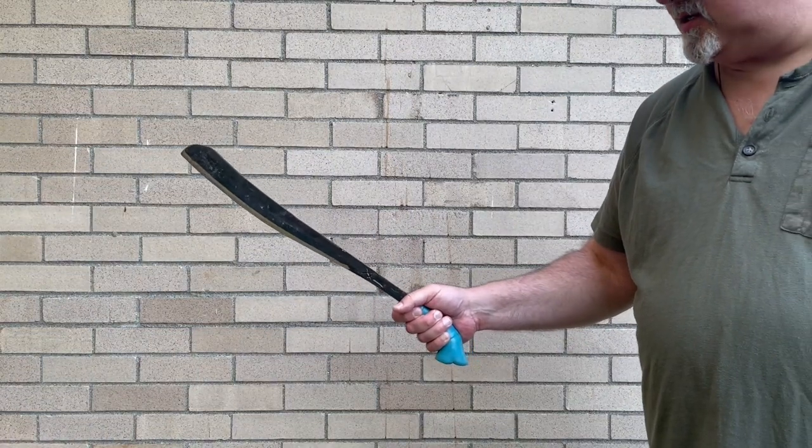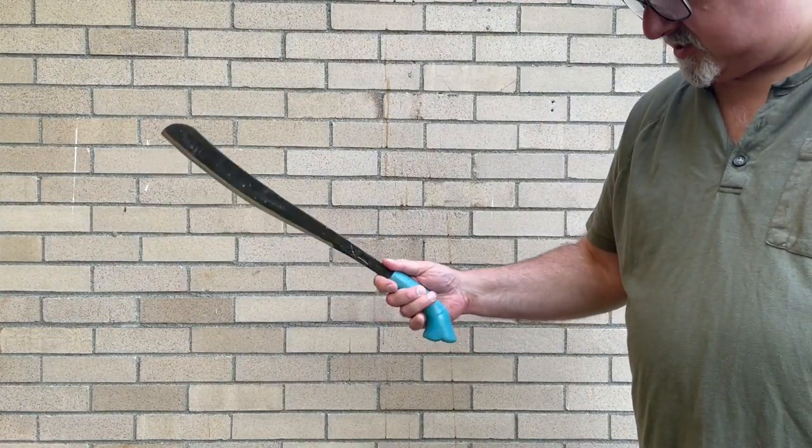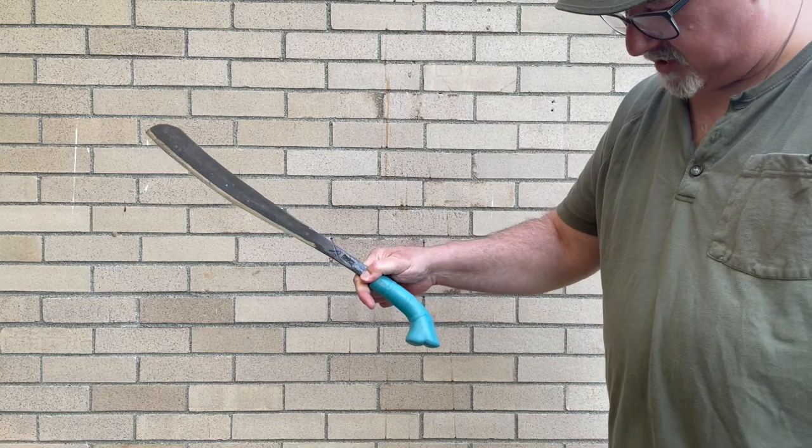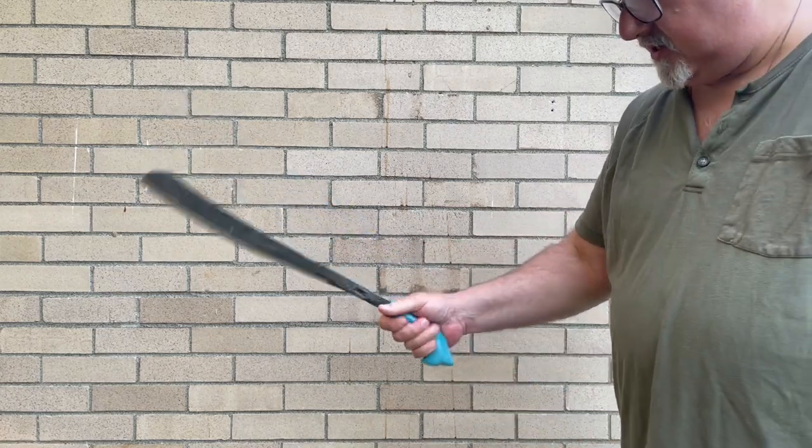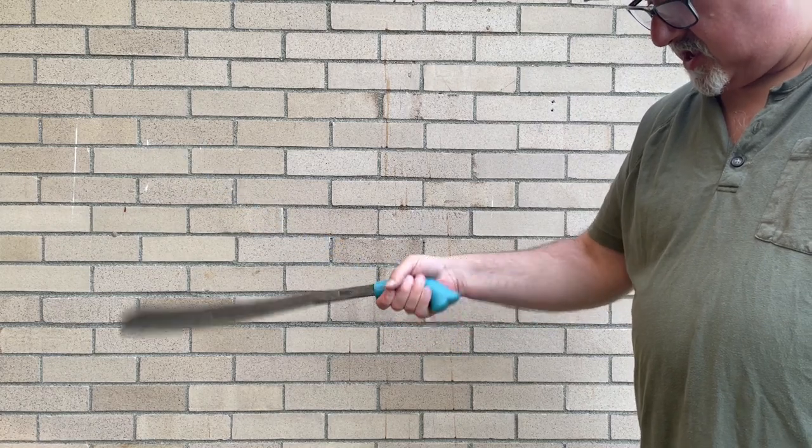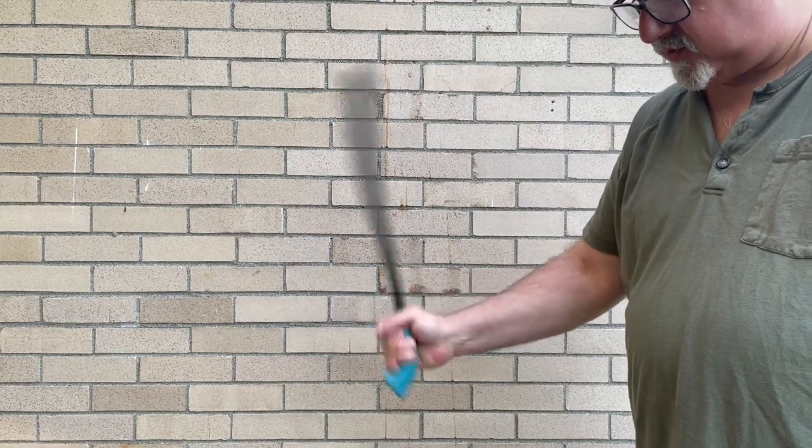However, in Southeast Asia you'll find this pistol grip kind of configuration common where the butt of the handle curves down, and this allows you as you swing to keep a more even grip on the hand, and what happens is as you swing,